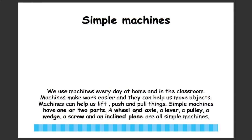Simple machines have one or two parts. A wheel and axle, a lever, a pulley, a wedge, a screw, and an inclined plane are all simple machines.